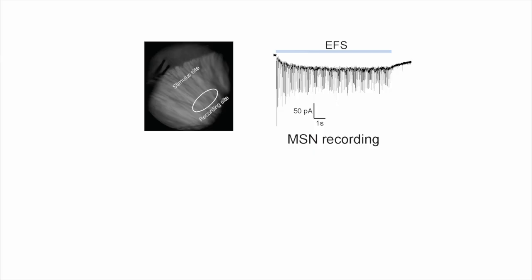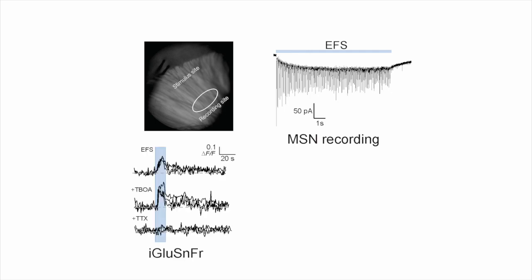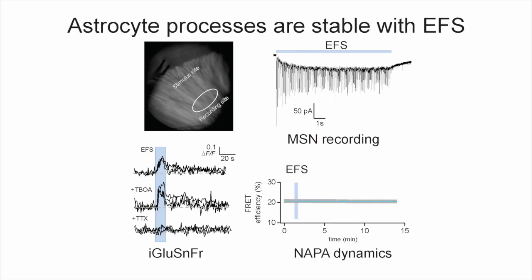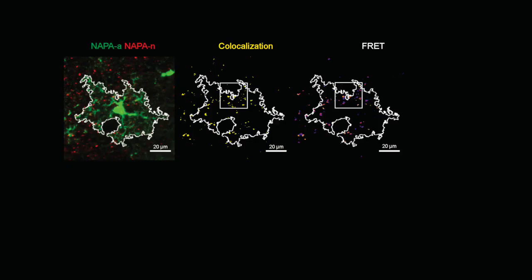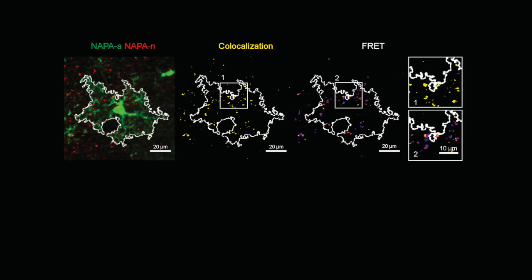We found that D1 and D2 positive MSNs were equivalently enveloped within an astrocyte's territory. To assess astrocyte process dynamics with synaptic signaling, we electrically evoked EPSCs at corticostriatal terminals. We confirmed that striatal astrocytes could detect glutamate release by iGlucoSnFR imaging and respond to it with calcium increases by LCK-GCAMP6F. However, when we assessed the FRET and co-localization signals of these inputs before and after stimulation, we found the interactions to be robustly stable.